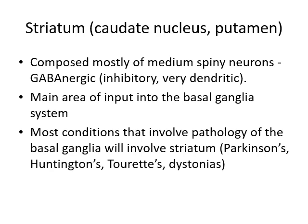The striatum is the main area of input into the basal ganglia system. The structures of the basal ganglia are organized almost like a little electrical circuit with one place to go in and one place to go out — and the place to go in is the striatum. If there's damage to the striatum, the entire basal ganglia system is disrupted. Without the striatum to bring in input from the rest of the brain, all other basal ganglia components become useless.